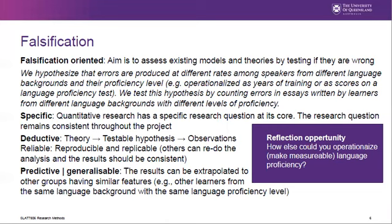Let's say we hypothesize that errors are produced at different rates depending on language background — German, French, Chinese, or Korean as a first language — and proficiency level, which can be operationalized as years of training or scores on a language proficiency test. We now want to test this hypothesis by counting errors in essays written by learners from different language backgrounds, and then control for different proficiency levels to see whether there's an observable, systematic difference between learners from different language backgrounds. This also means that quantitative research has a specific, narrow question at its core, and the research question remains consistent throughout the project. Additional observations may be noted, but they serve only as inspiration for future research.